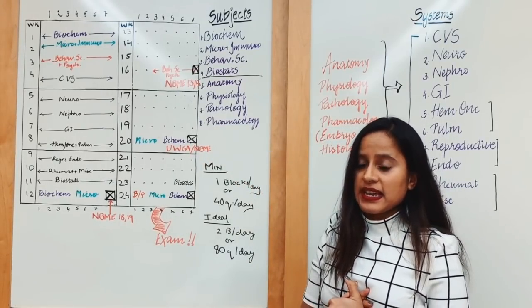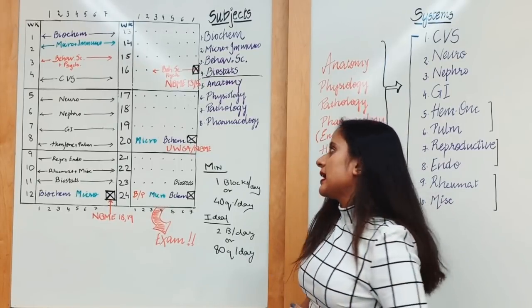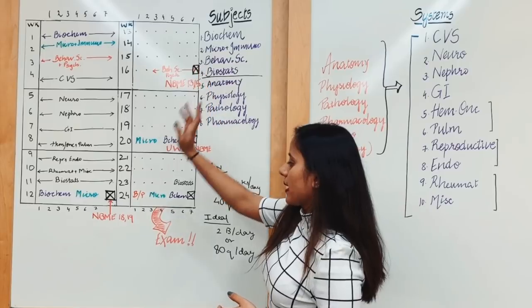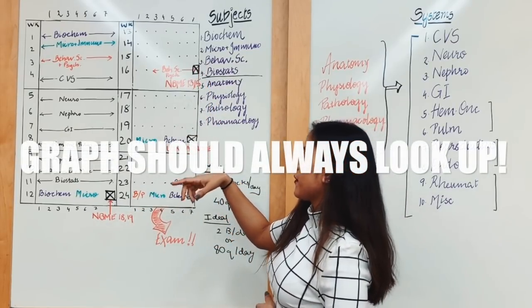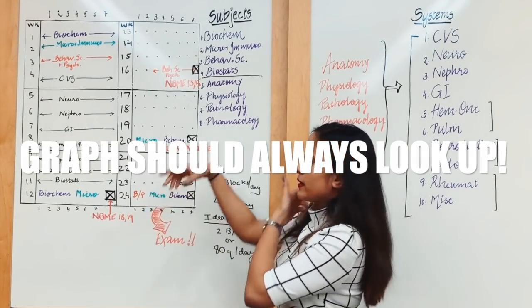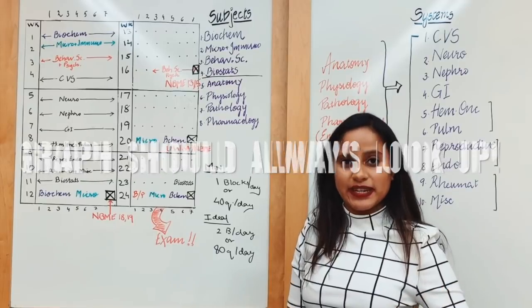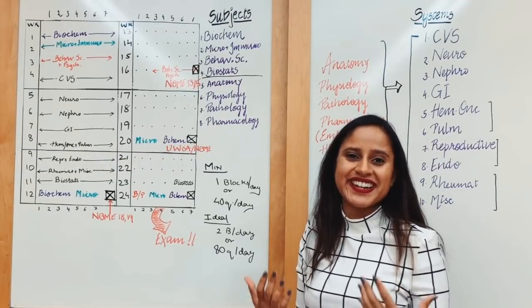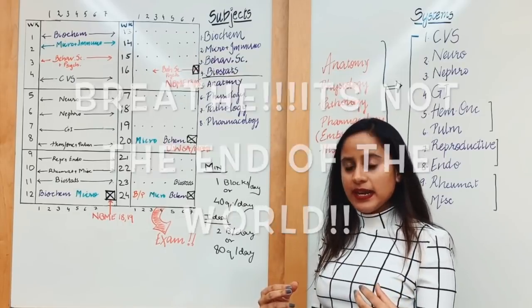Whatever you do in your fourth and fifth months, they have to be highly tailored to how you're scoring on your NBMEs. Whatever your target score is, if you're getting that in your NBME first, then your graph should be looking up. If you haven't achieved a target score in NBME first, you should achieve it by here.